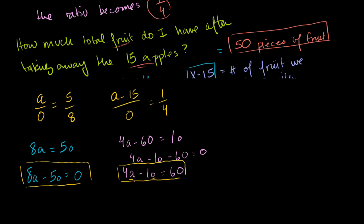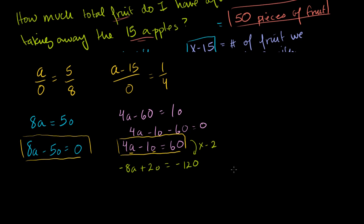So how do we solve this? We can multiply one of these times a convenient factor and then add them or subtract them to get rid of one of the two variables. Let's multiply this equation times minus 2, so it becomes minus 8A plus 2O equals minus 120. Then if I add it to this equation, 8A minus 5O equals 0, let's add these two equations. This becomes 0A, minus 5 plus 2 is minus 3O equals minus 120.